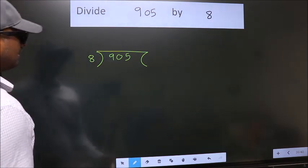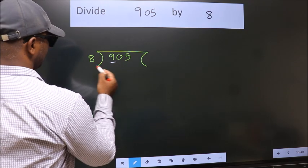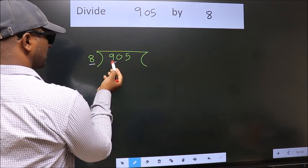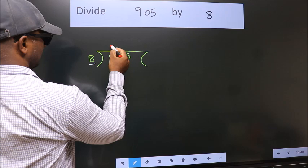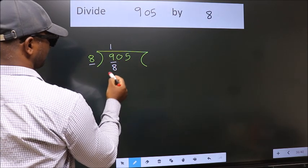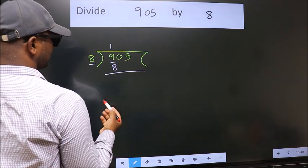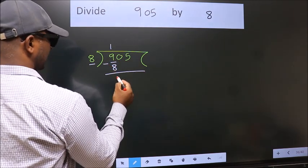Next. Here we have 9, here 8. A number close to 9 in 8 table is 8 once 8. Now, we should subtract. We get 1.